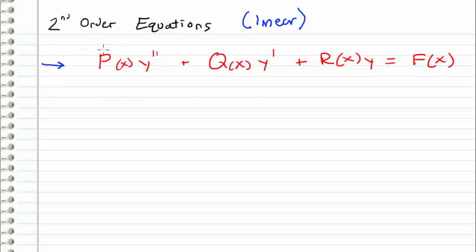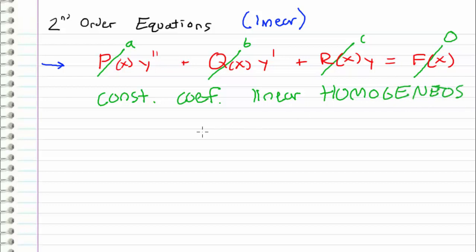So to start off second order equations, we are going to consider the most simple case. And that is, we're going to let P(x) be a constant, we'll call a. We're going to let Q(x) be a constant, we'll call b. And R(x) be a constant called c. So these are no longer functions of x, but they are constant coefficients. And also, the next simplification that we are going to make is we're going to let this forcing function on the right hand side be equal to zero.